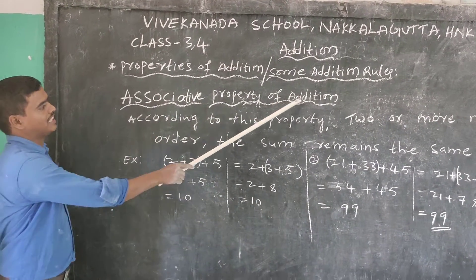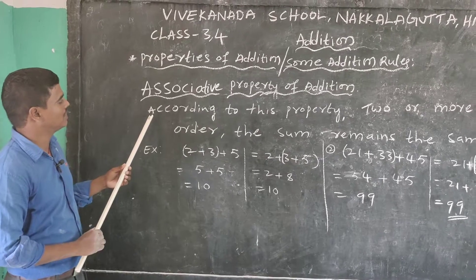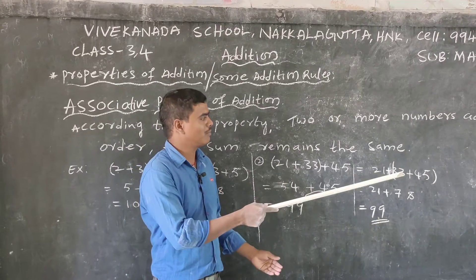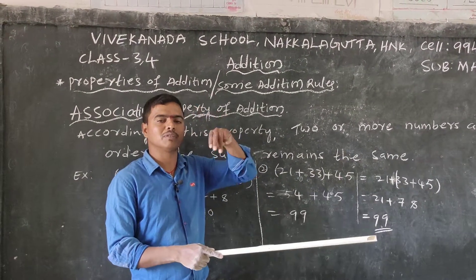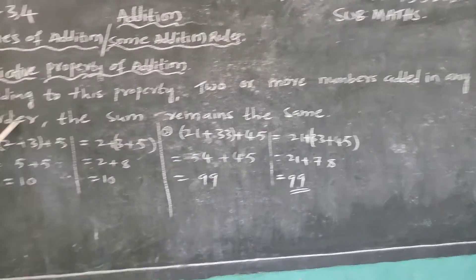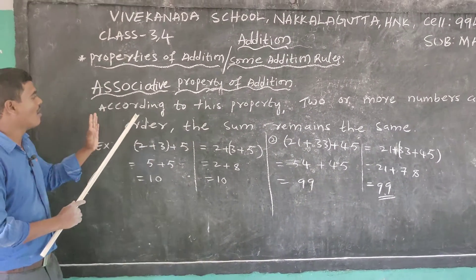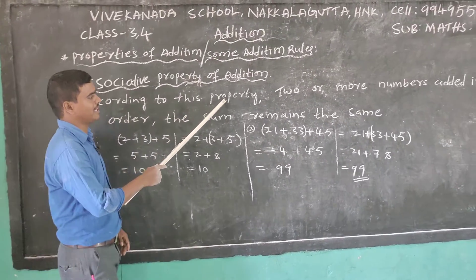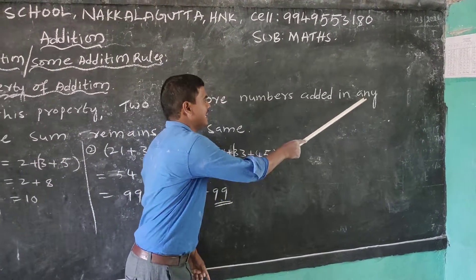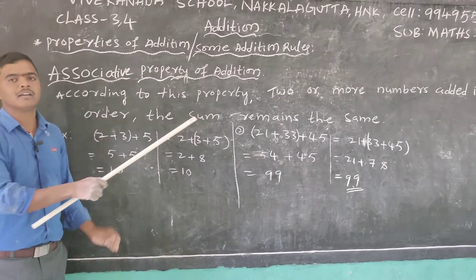Next property: the associative property of addition. What is the associative property of addition? According to this property, 2 or more numbers — meaning 3, 4, 5 numbers — added in any order will give the same sum. The sum remains the same.